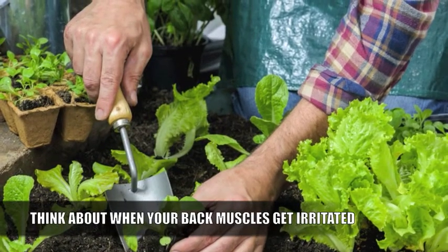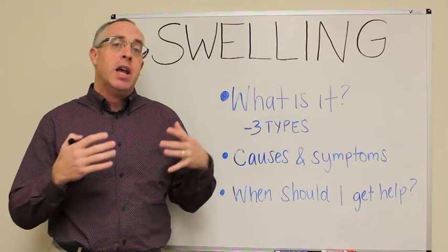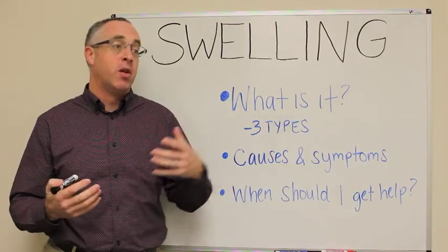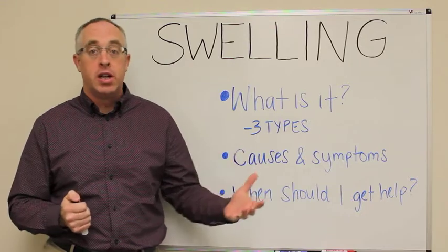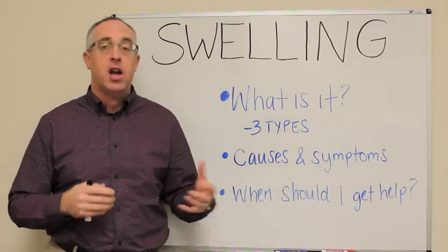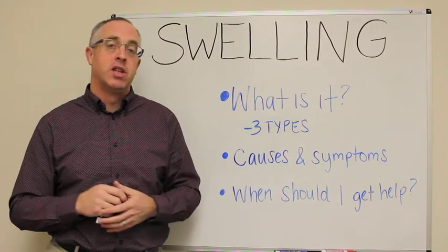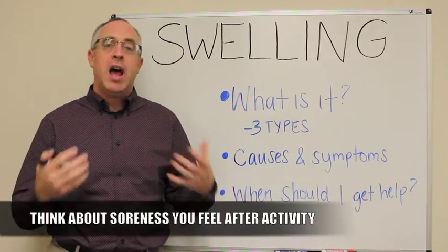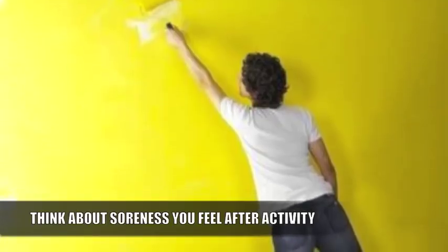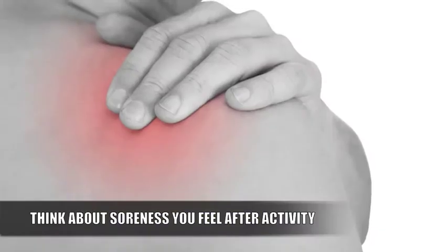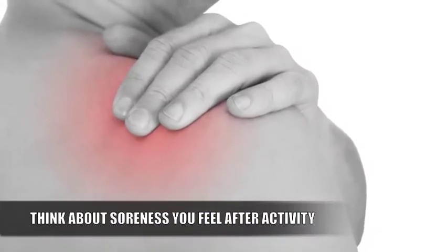The third type of swelling comes from abnormal stress. It could be abnormal stress on an organ like your liver or kidney. But in the context of muscles, bones, and ligaments, abnormal stress would be something like painting a room — your shoulder, your elbow, your arm are all going to be sore, and that soreness is coming from swelling.